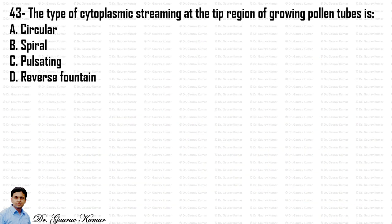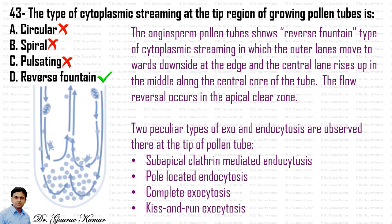The type of cytoplasmic streaming at the tip region of a growing pollen tube is reverse fountain. The angiosperm pollen tube shows reverse fountain type of cytoplasmic streaming, in which the outer lanes move downward at the edge and the central lane rises upward along the central core of the tube. The flow reversal occurs in the apical clear zone.